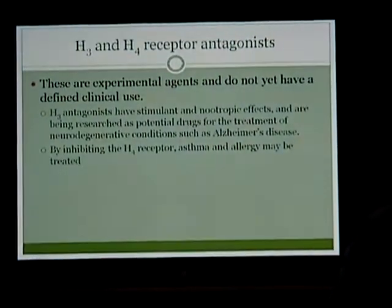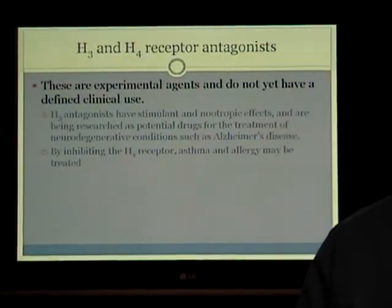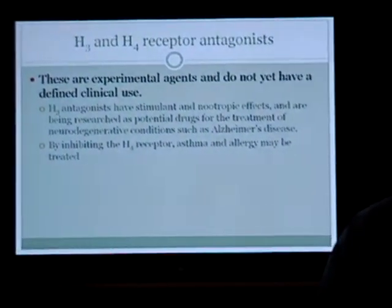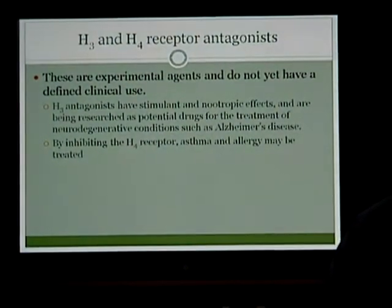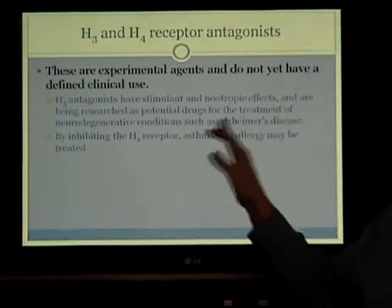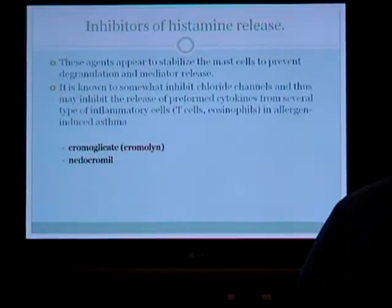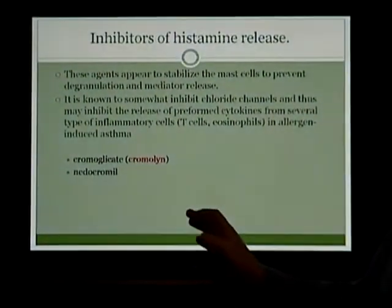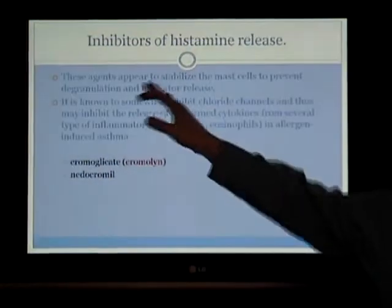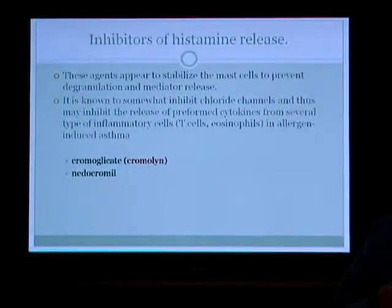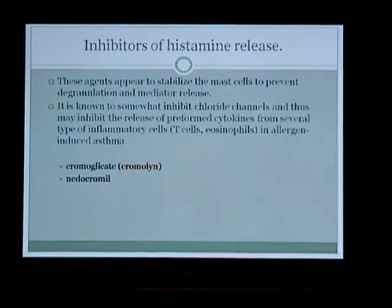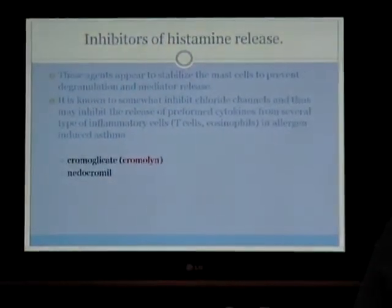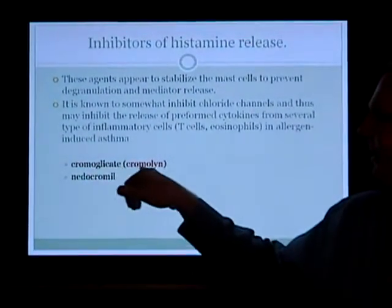H3 and H4 receptor antagonists are still experimental agents and don't have a defined clinical use. H3 antagonists have stimulant and nootropic effects and are being researched as potential drug targets for the treatment of neurodegenerative conditions such as Alzheimer's. H4 is more closely related to asthma and allergy treatment. Mast cell stabilizers prevent the release of histamine from the granules in the mast cell — they are known to inhibit chloride channels and may inhibit the release of preformed cytokines in several types of inflammatory cells. The most common one is cromolyn sodium.